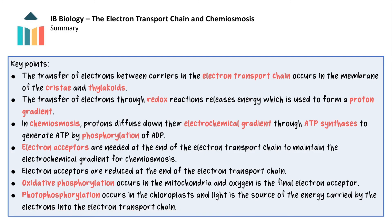Note that the buzzwords are highlighted — these are the words important to include in your written answers. Overall, the electron transport chain and chemiosmosis are key concepts in understanding how cells generate ATP through the processes of respiration and photosynthesis.